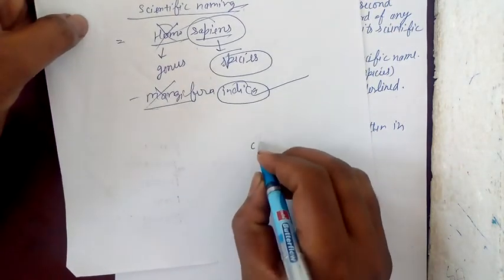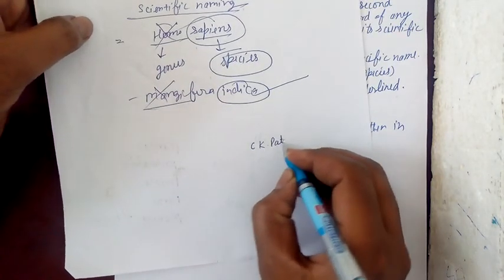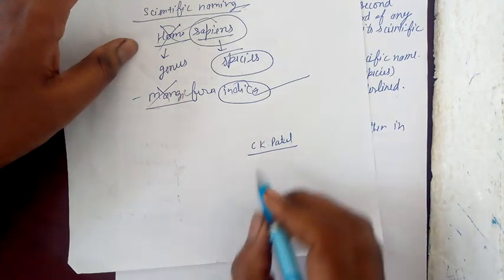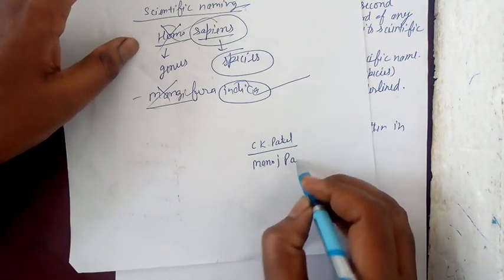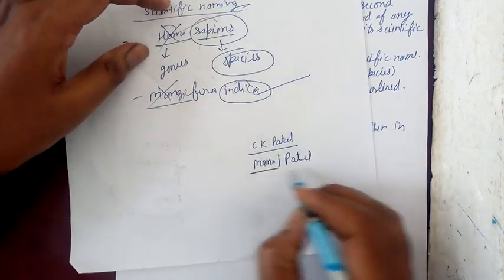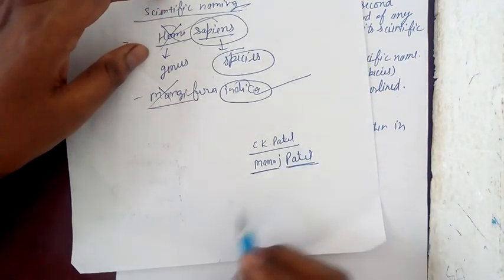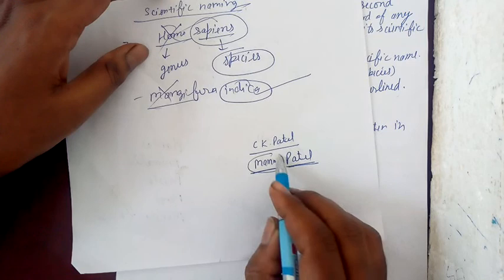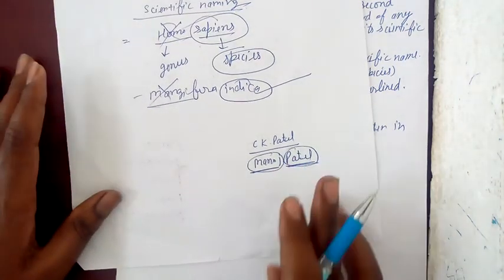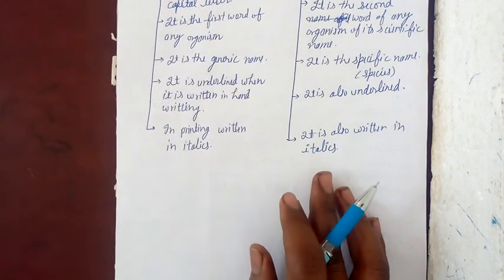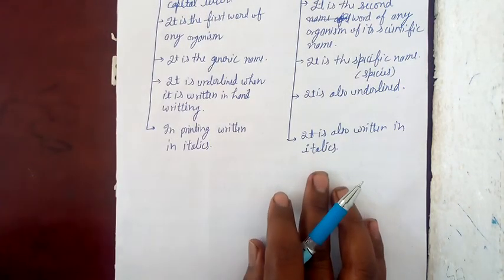Let me show you a particular example with a copy. You can see a practical example of how scientific names work. This is a scientific name with two parts.